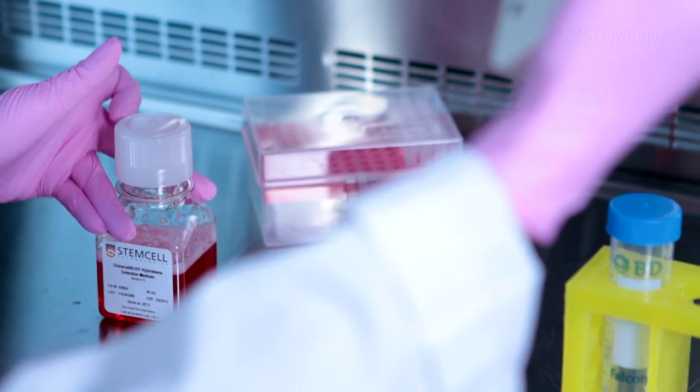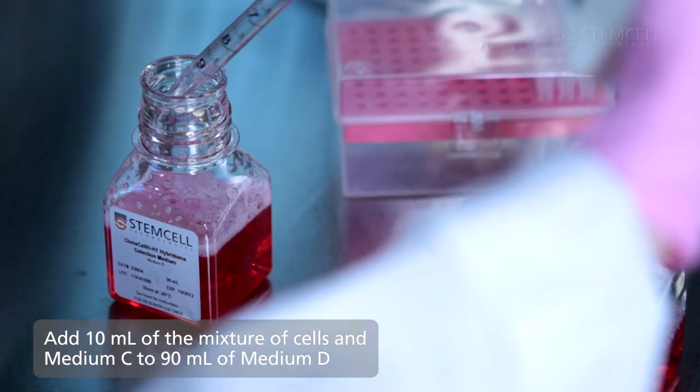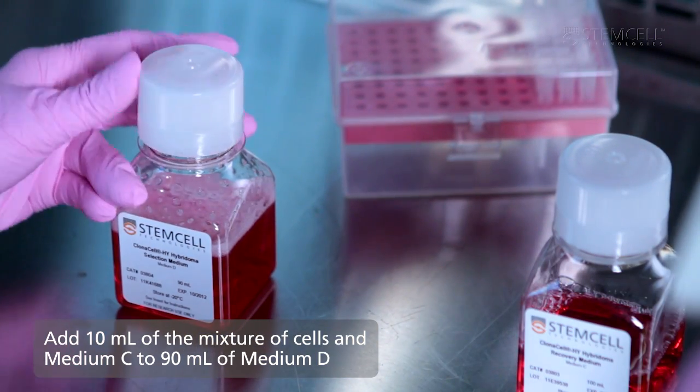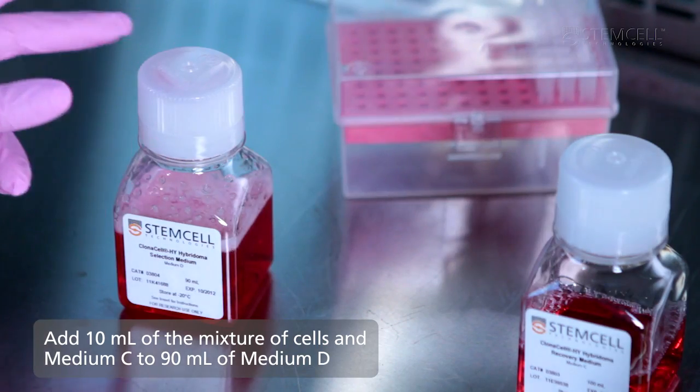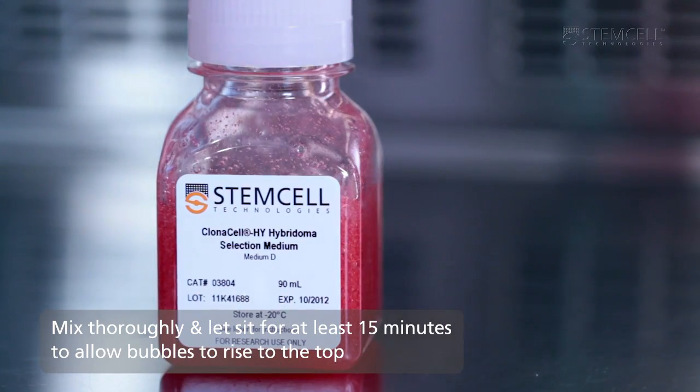Add 10 milliliters of the mixture of cells in medium C to 90 milliliters of medium D. Mix thoroughly and let sit for at least 15 minutes to allow bubbles to rise to the top.